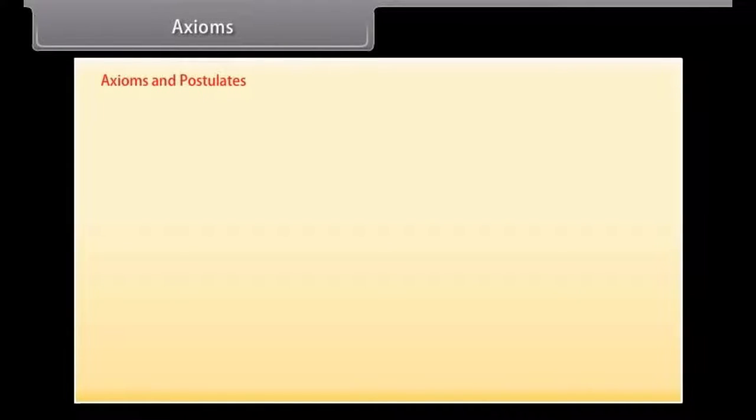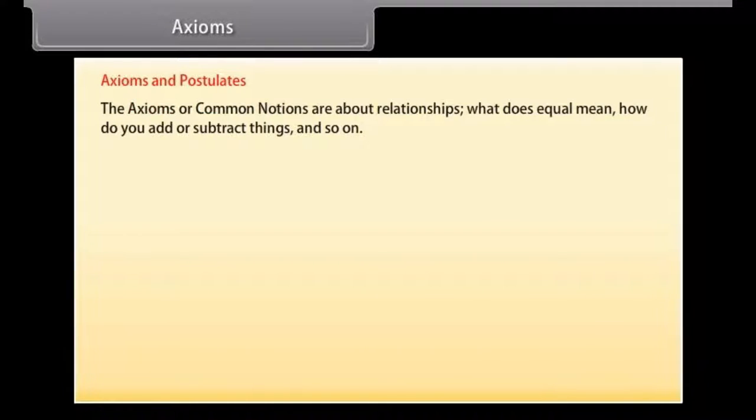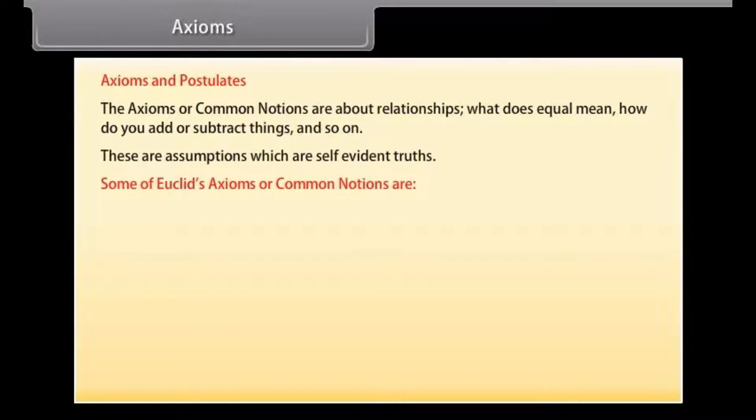Axioms. Euclid describes axioms and postulates which we will discuss here. The axioms or common notions are about relationships. What does equal mean? How do you add or subtract things? And so on. These are assumptions which are self-evident truths.